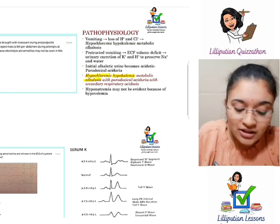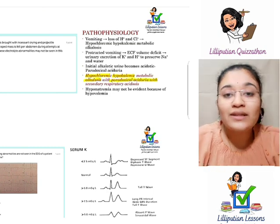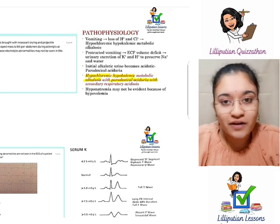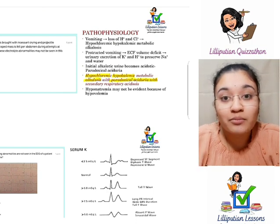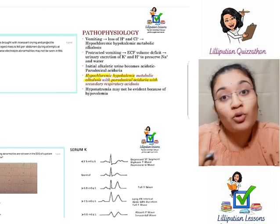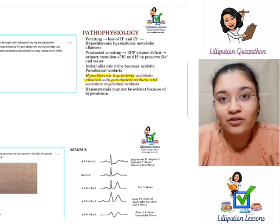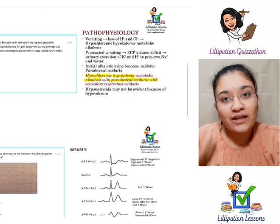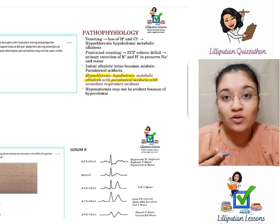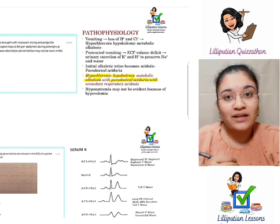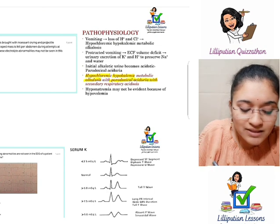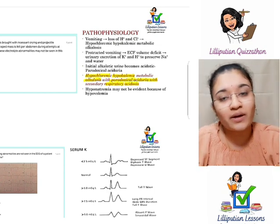Here is the catch: there is paradoxical aciduria. One would think the renal system would not excrete acid since the body is already short of it. However, sodium is much more valuable to the body than hydrogen. In times of extreme alkalosis, the body preferentially retains sodium over hydrogen, so in the kidney, sodium is retained in exchange for hydrogen — causing paradoxical aciduria. Secondary respiratory acidosis is just a compensatory mechanism.